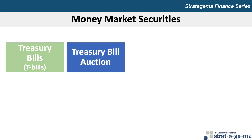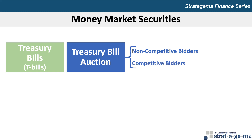The primary T-bill market is an auction where investors have the option of bidding competitively or non-competitively. Non-competitive bidders are limited to purchasing T-bills with a maximum par value of $10 million per auction. Competitive bidders specify the price they're willing to pay along with the quantity desired.